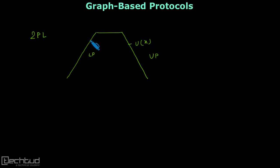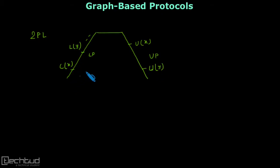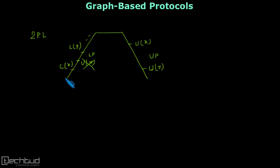During the locking phase or growing phase, we cannot release any lock. So if we have lock X, then lock Y, and so on, we release X and then unlock Y — but between these two locks we cannot release any lock. We cannot do unlock X in between; this is not allowed in two-phase locking protocol. That's why we call it two-phase: first phase only locks, second phase only unlocks.